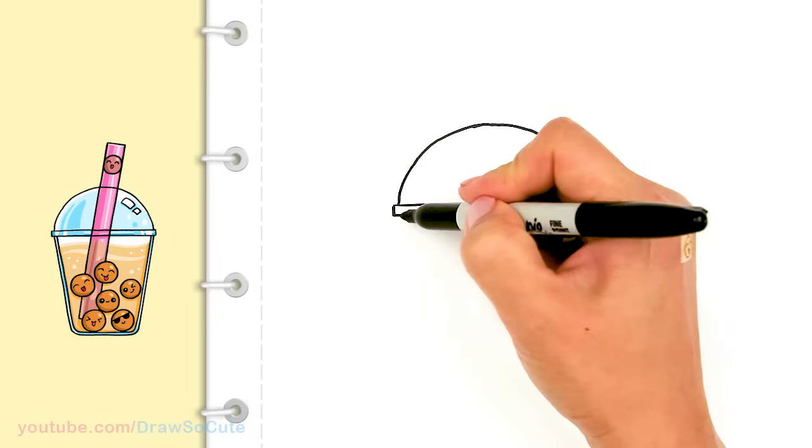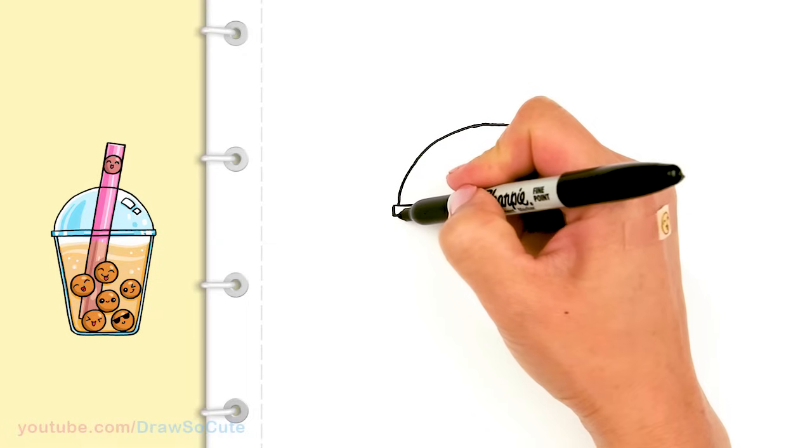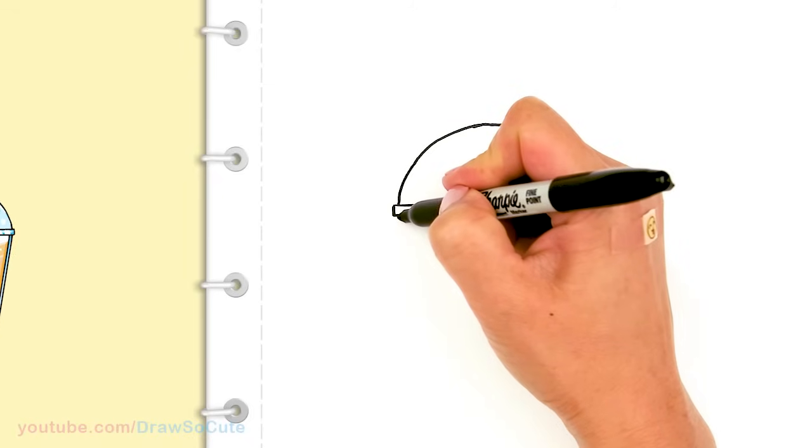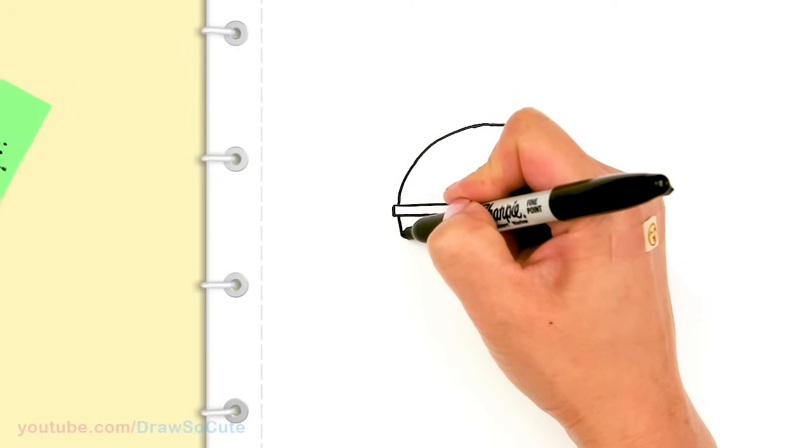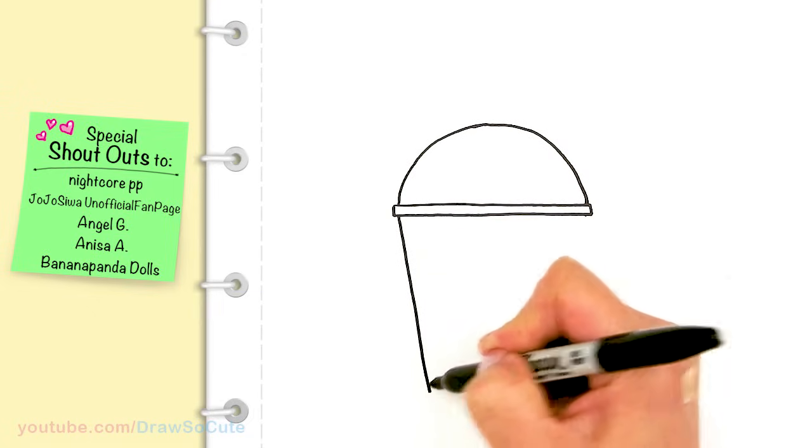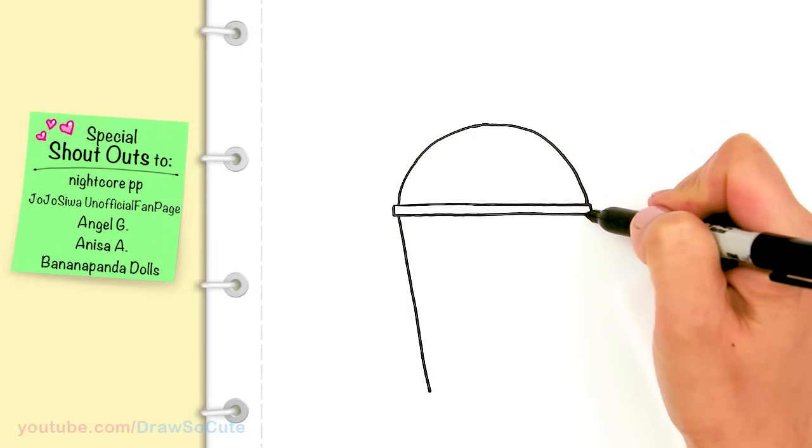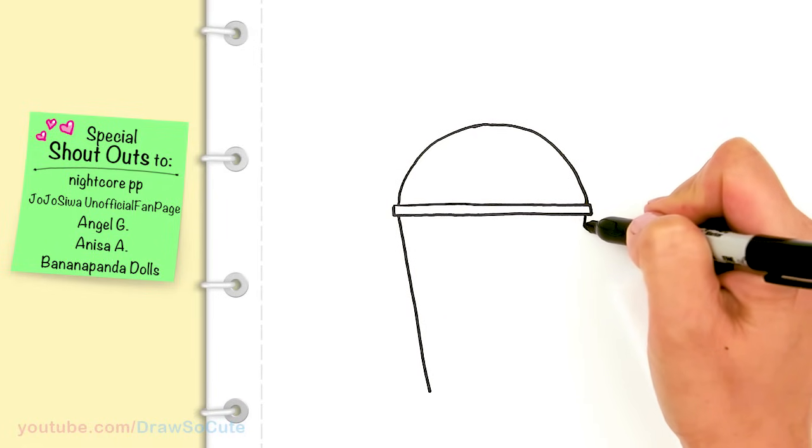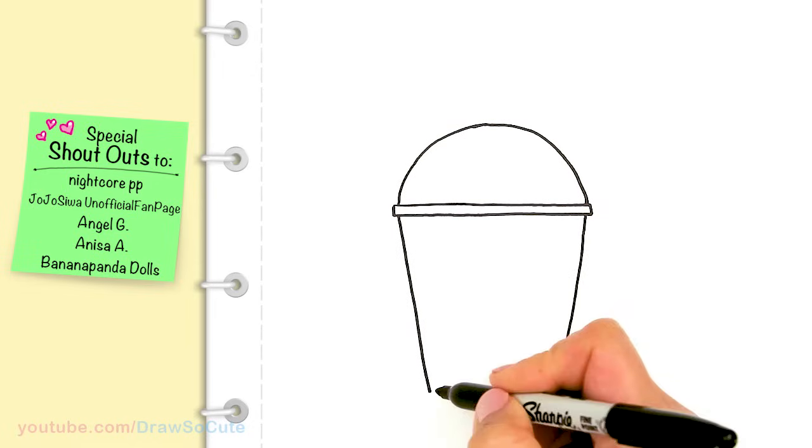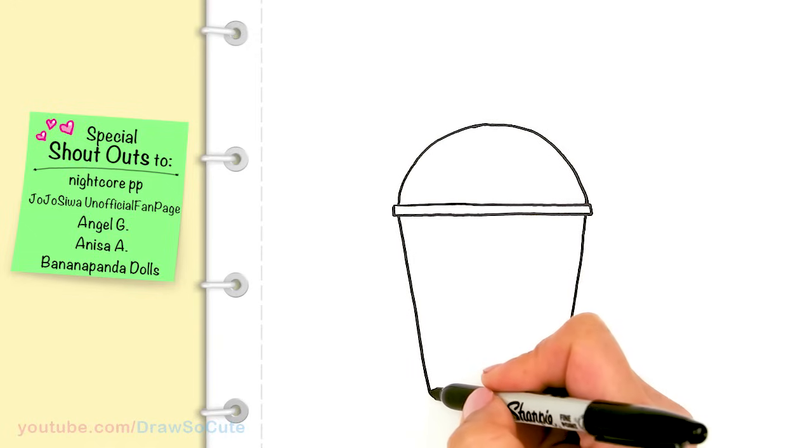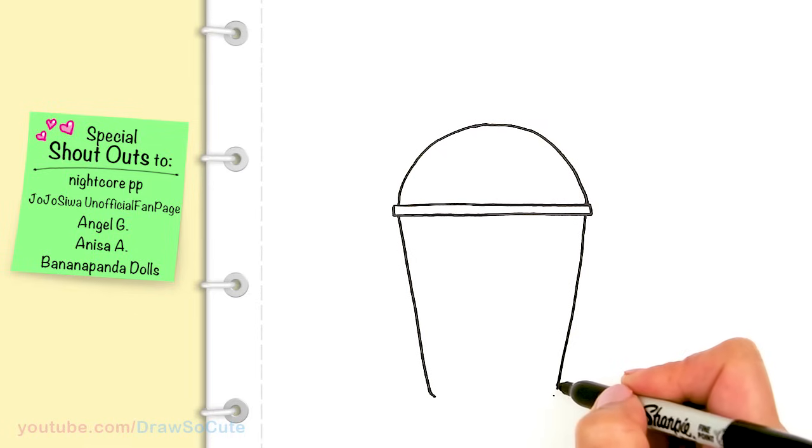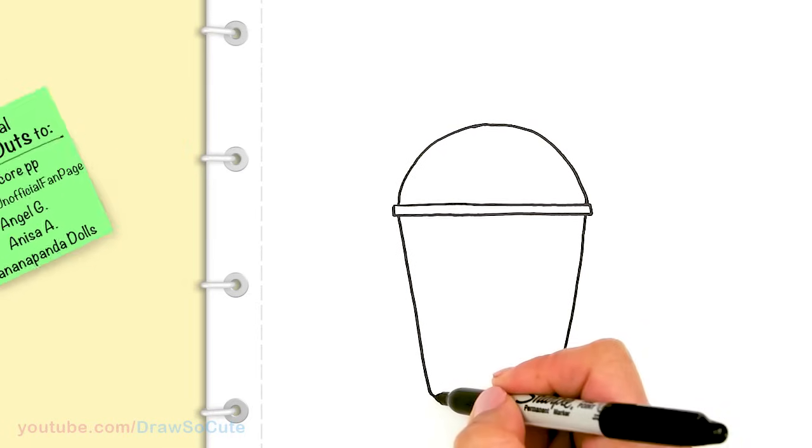Then from there we're going to draw the cup itself. So in this area right here come in a little bit. And we're going to draw an angle line. So come about right here. About that much. And same thing on this side. And in this area we're going to round it off. So about the same but right there. Round it off and connect it.